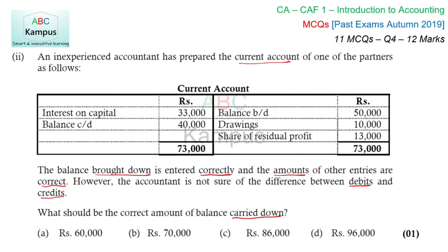Balance brought down is correct as stated. Drawings reduce the current account balance and come on the debit side — so placing them elsewhere is incorrect. Share of residual profit increases the current account balance and should be on the credit side — that is correct. Interest on capital also increases the current account balance; when a partner receives interest on capital, their balance increases, so recording it on the debit side is wrong.